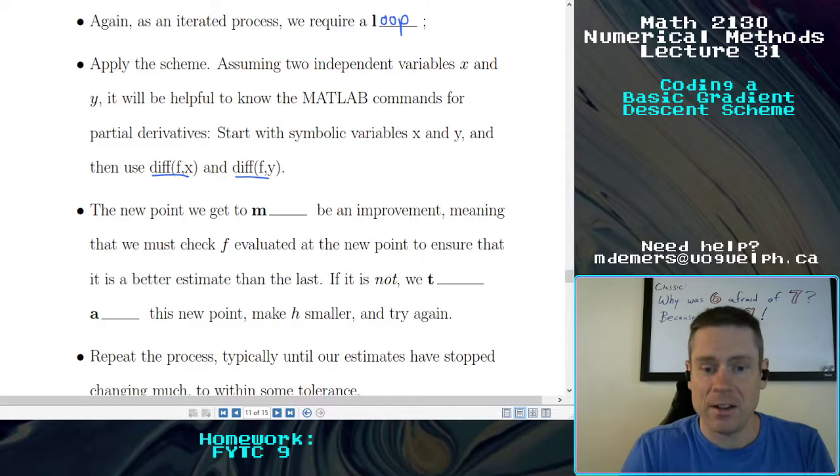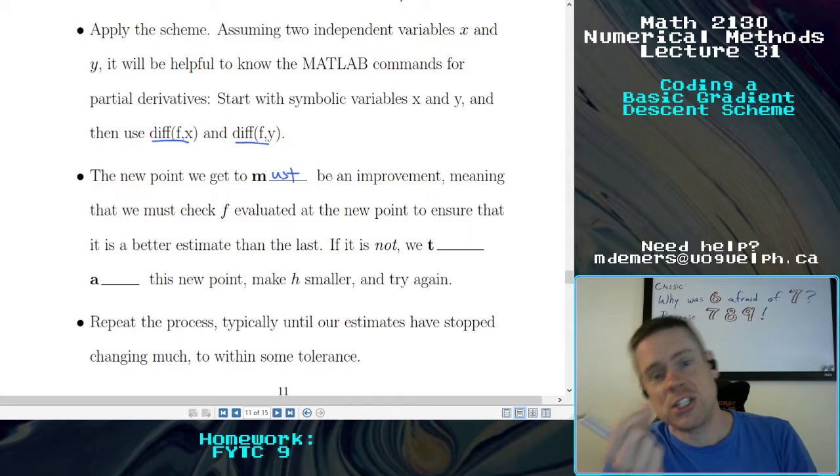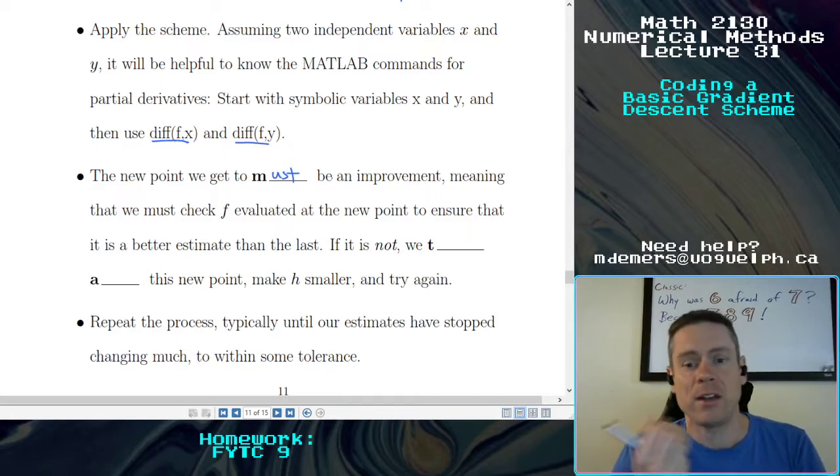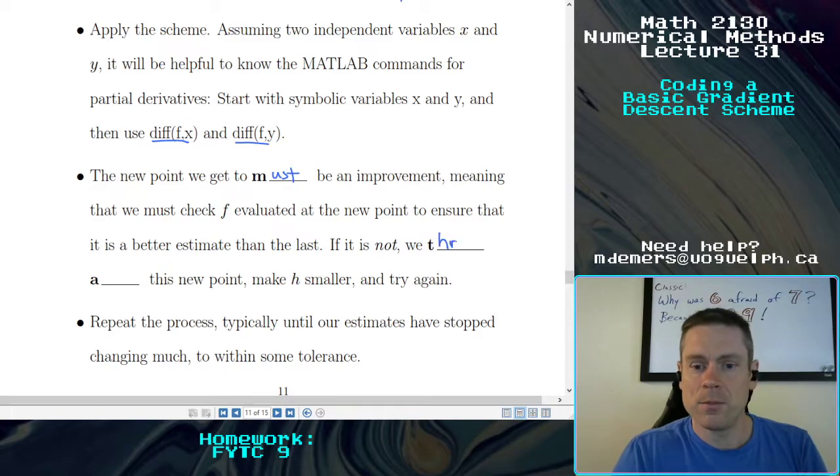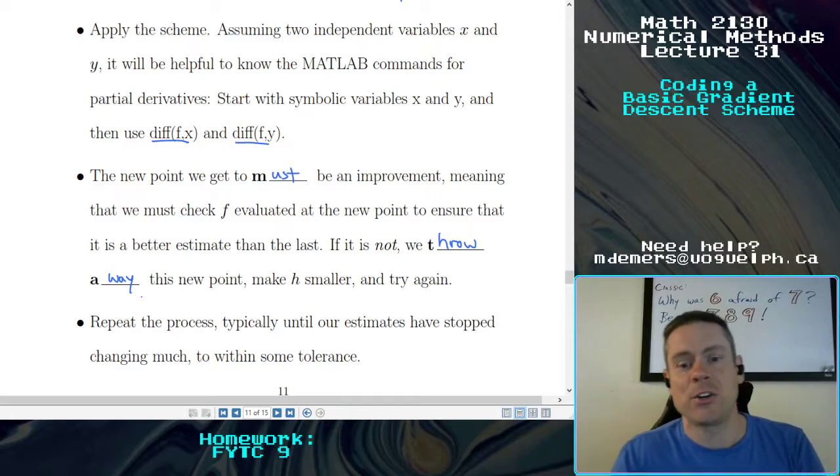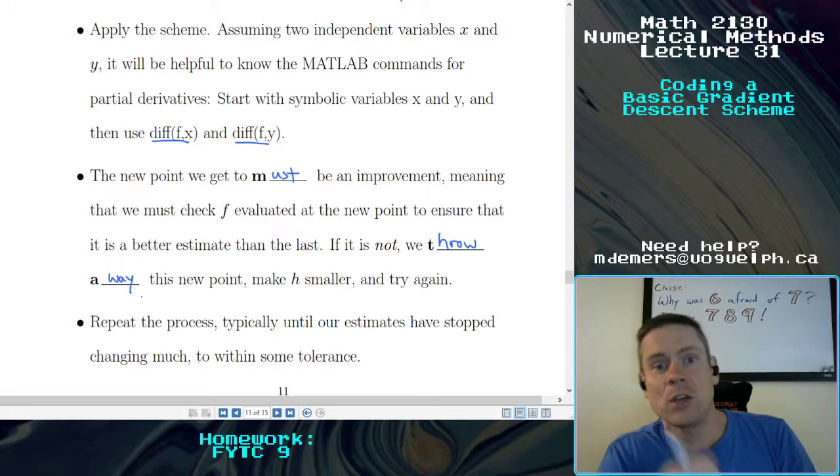The new point we get to must be an improvement or else we have to be able to step back and try something else. So we have to check f evaluated at the new point to ensure that it is a better estimate than the last. If not, we throw away that new point, we make h smaller and try again. So we want to be careful before we define our next estimate because we want it to be a better estimate before we make that the next thing that we step to.